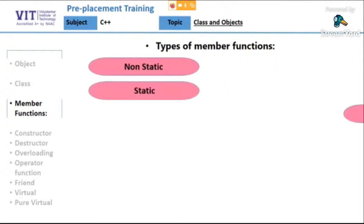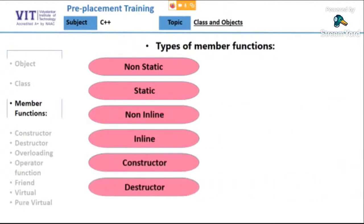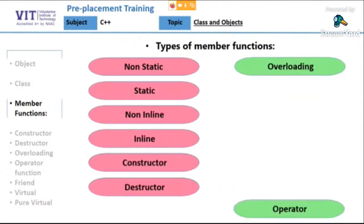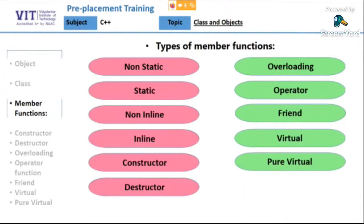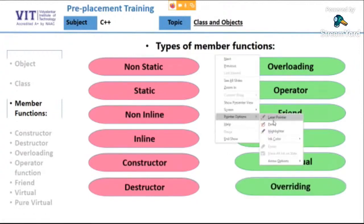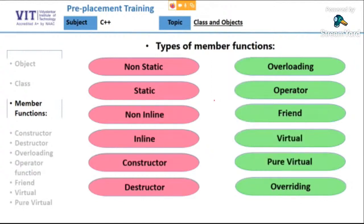Member functions can be non-static, static, non-inline, inline, constructor, destructor, function overloading, operator overloading, friend function, virtual function, and function overriding. Out of all these functions that we can have inside object-oriented programming, we have finished all types up till now as well as function overloading.